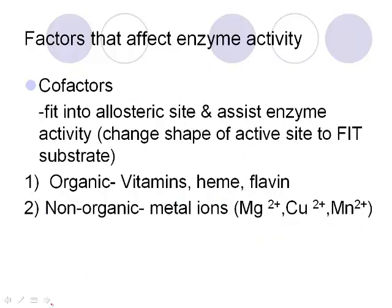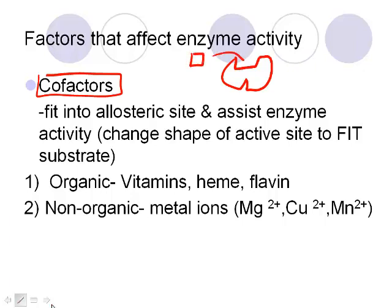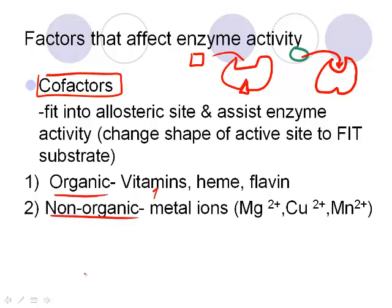There are also factors that actually increase enzyme activity, called cofactors. They work similarly to inhibitors except the effect is positive. The active site may be the wrong shape for the substrate, but when a cofactor plugs the allosteric site it causes a beneficial shape change so the substrate can now fit in and the reaction can happen. There are two types: organic ones, called vitamins, as well as heme and flavin; and non-organic ones, which are metal ions like magnesium, copper, and manganese.